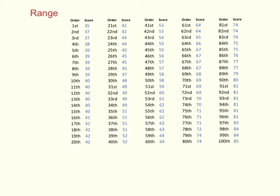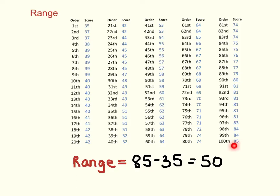Here's a data set that we're going to use to talk about the different measures of variability. This data set has 100 values with scores — you can think of these as scores on a quiz — and all the scores are ranked in order from the lowest to the highest. The first measure of variability is very simple: the range. It's simply the distance between the first and last score, which equals 85 minus 35, which equals 50.